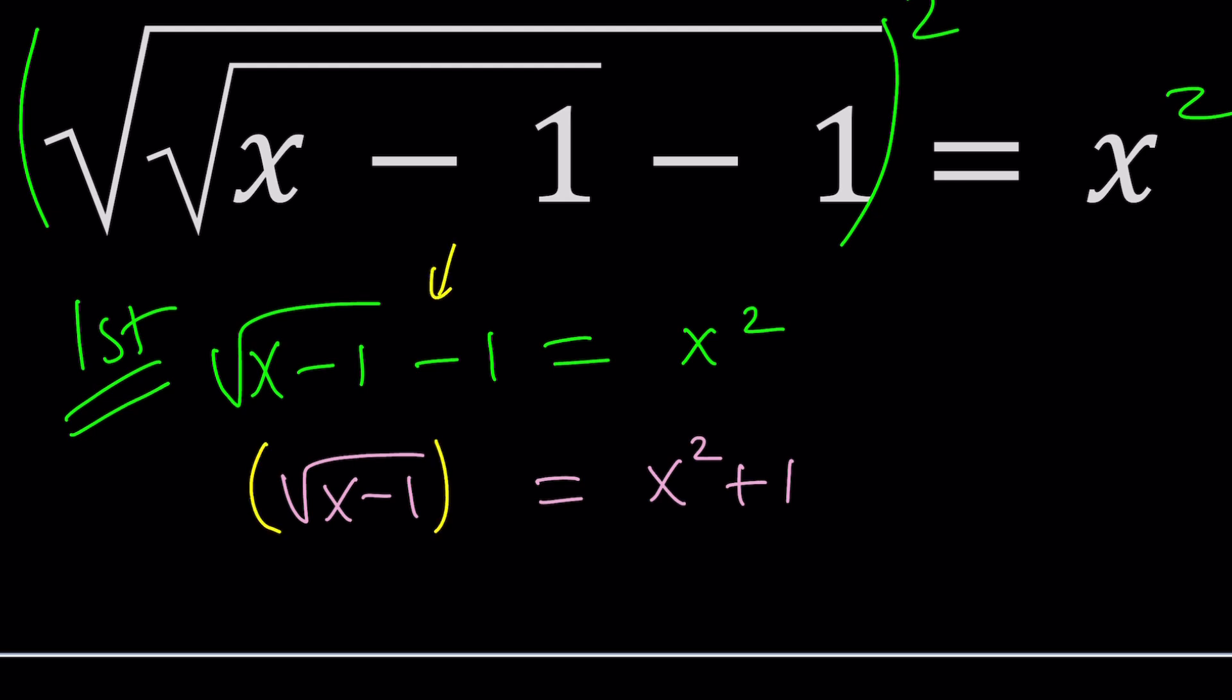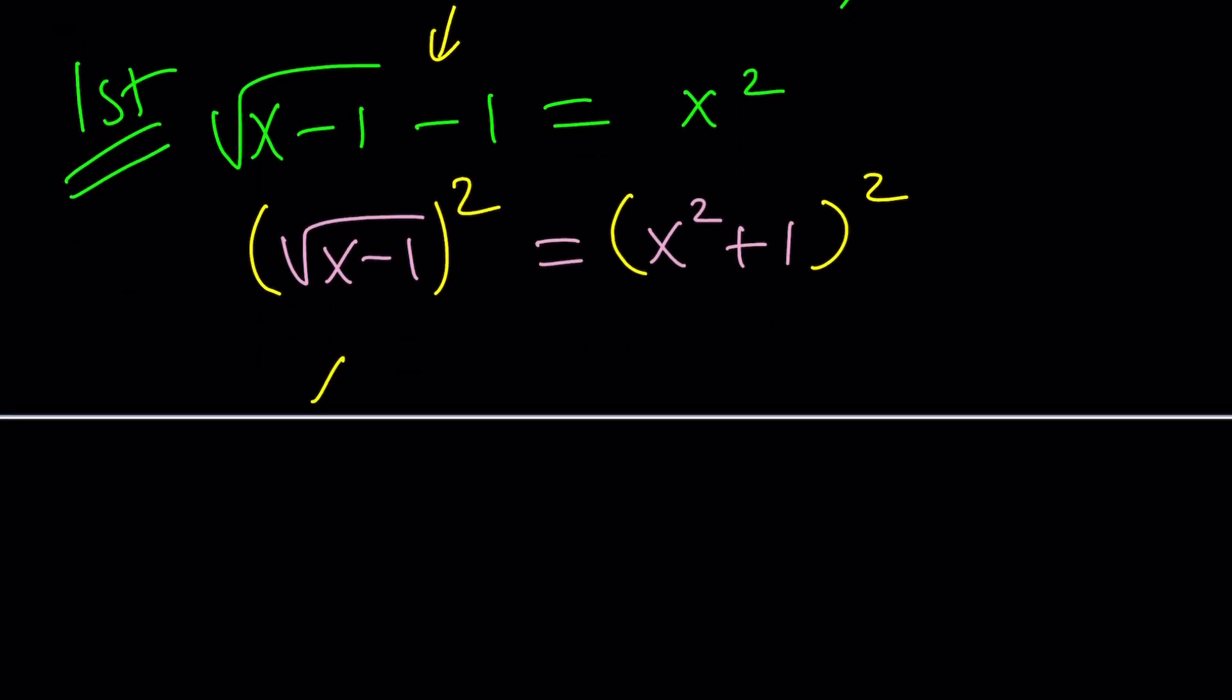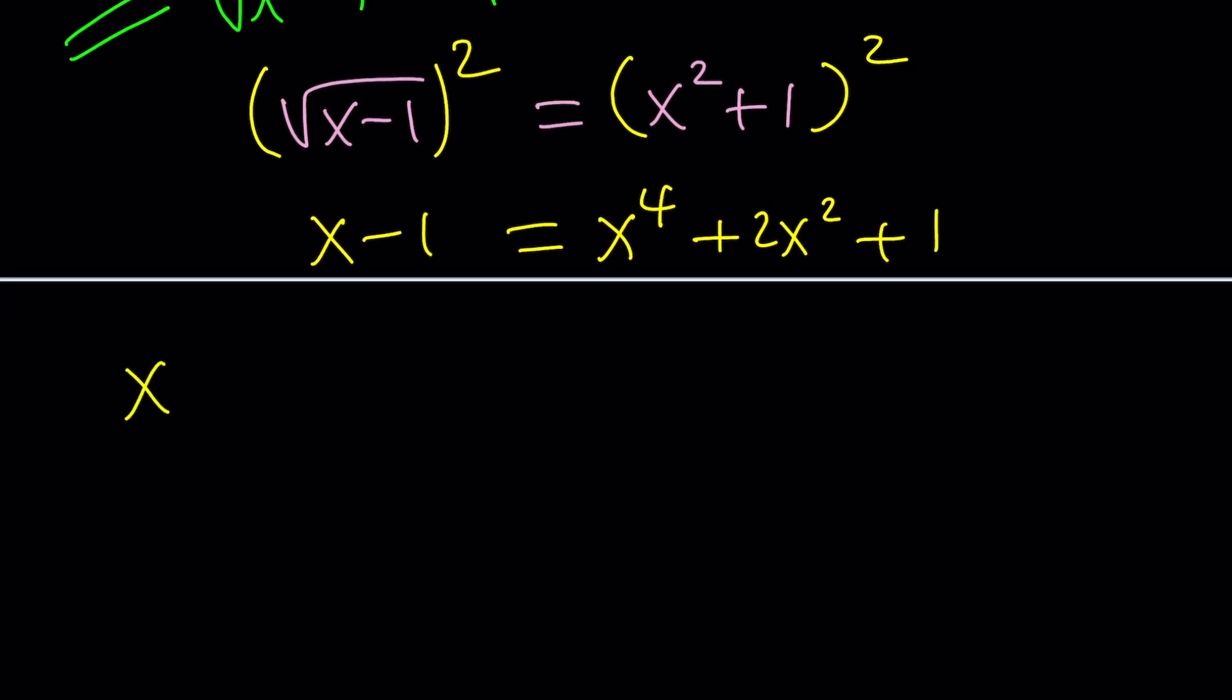To get rid of the radicals as soon as possible, as quickly as possible, we should isolate the radical first and then square both sides. Make sense? You can square like this too, but at some point you're going to have to isolate it. Now here we get x minus 1. And this gives us x to the fourth plus 2x squared plus 1.